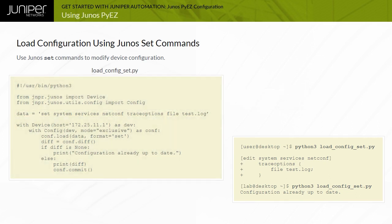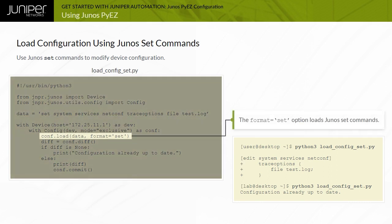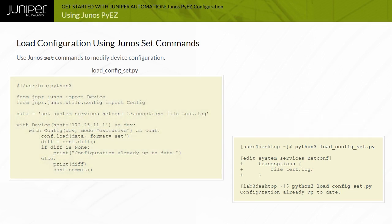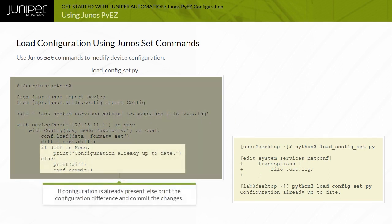The config object load method references the data variable and uses the format option that enables Junos set commands to be used as configuration input. The example script also uses Python if-else logic to verify if the configuration already exists on the device and prints the configuration difference to the screen.